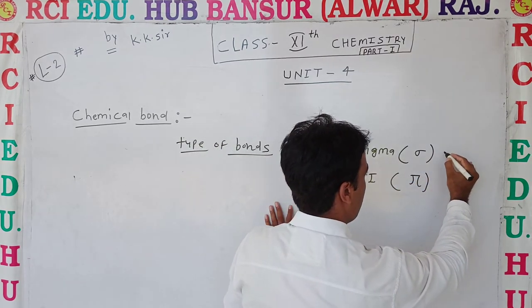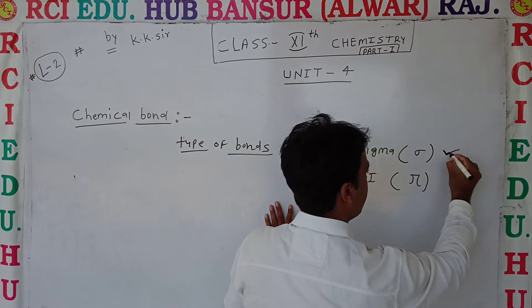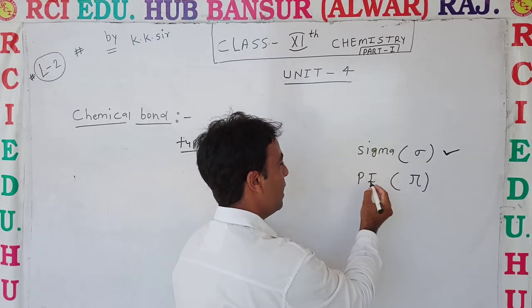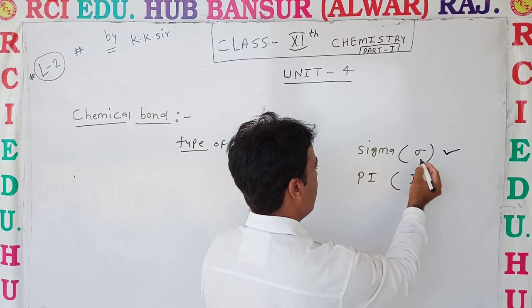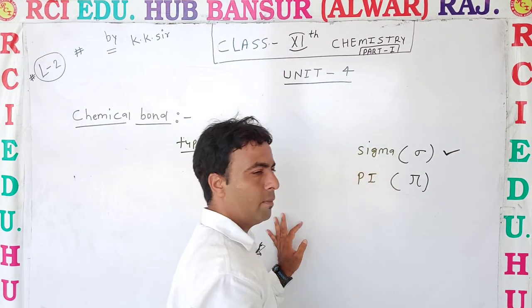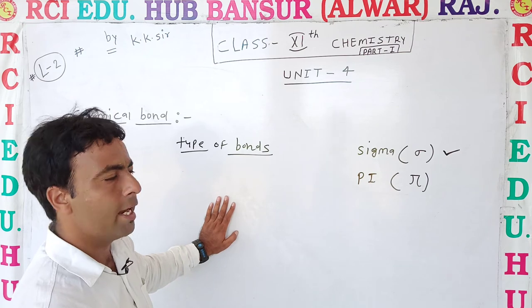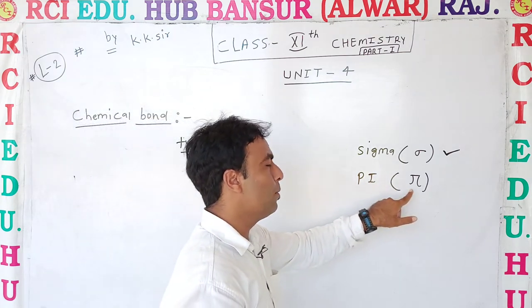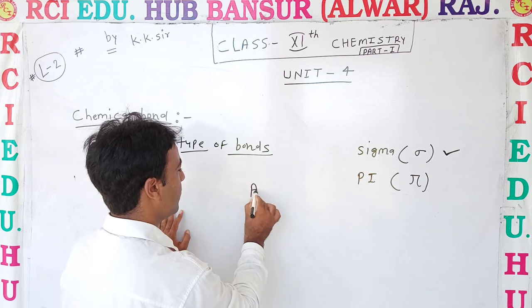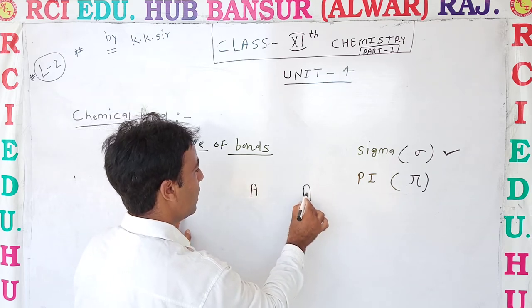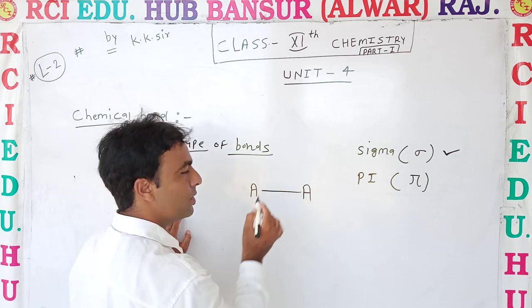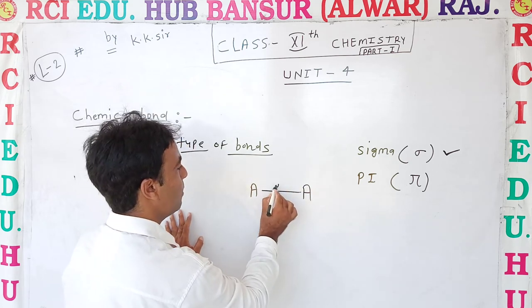The bond which is formed first of all between two atoms is called a sigma bond. If atoms form a bond between them for the first time, that is called sigma bond. For example, between atom A and atom A, there will be formation of a bond — that is called sigma bond.